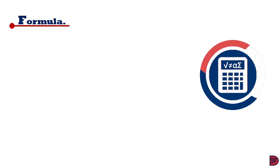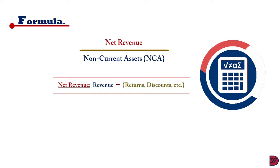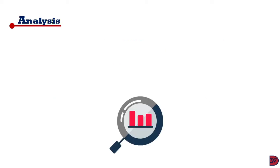The formula for the non-current asset turnover ratio is net revenue divided by non-current assets. Net revenue, as we already know, is revenue less any sales returns or discount allowed.